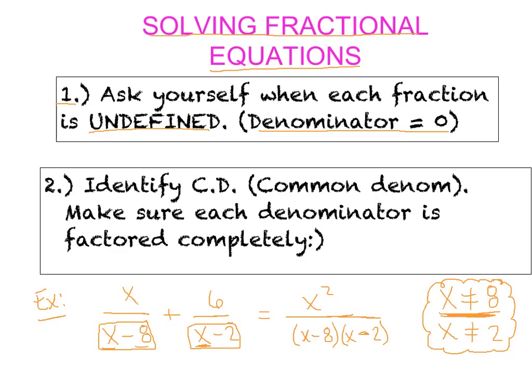Step number two is to get in the habit of identifying the common denominator. Now one thing you'll notice here, it's very important that each denominator is factored completely. Last week we saw several times we were trying to figure out the common denominator in our head without factoring all the denominators. And that's an extremely difficult task. So just go ahead, take the extra time to factor these denominators. You'll notice down here in this example, I've already factored that denominator completely. So I would simply say that my common denominator is the quantity x minus 8 and the quantity x minus 2.